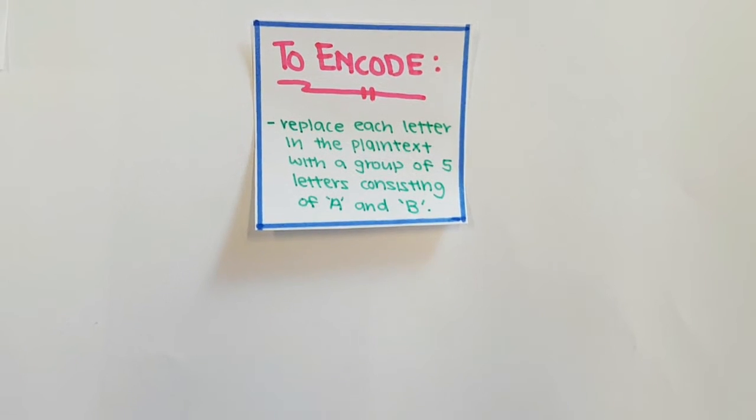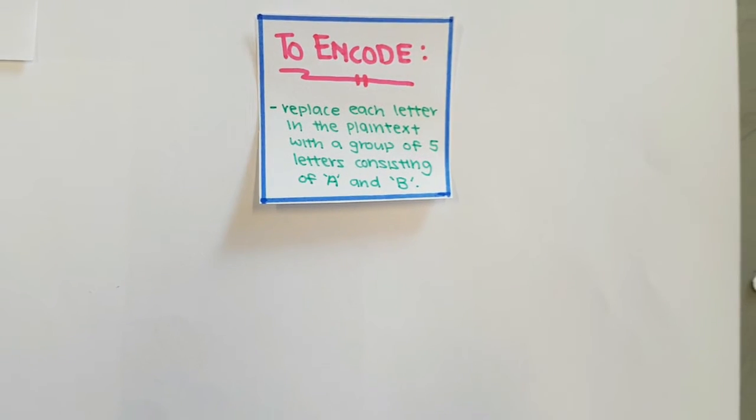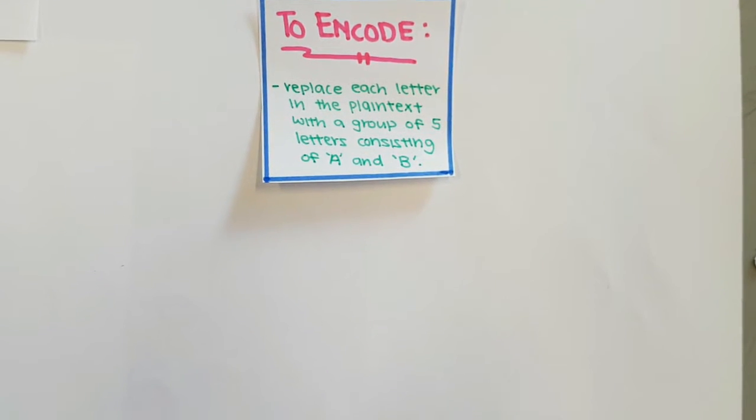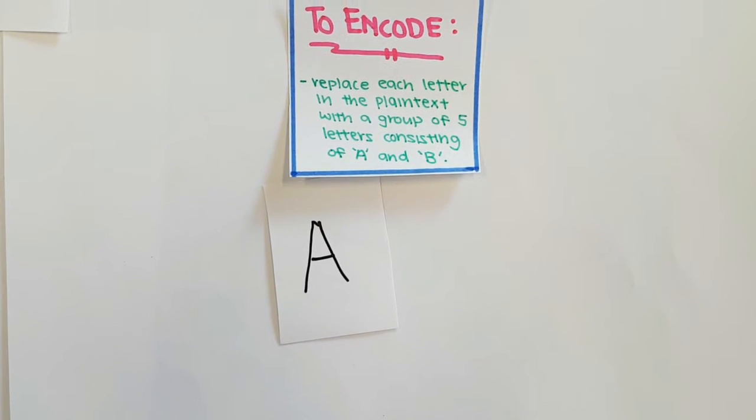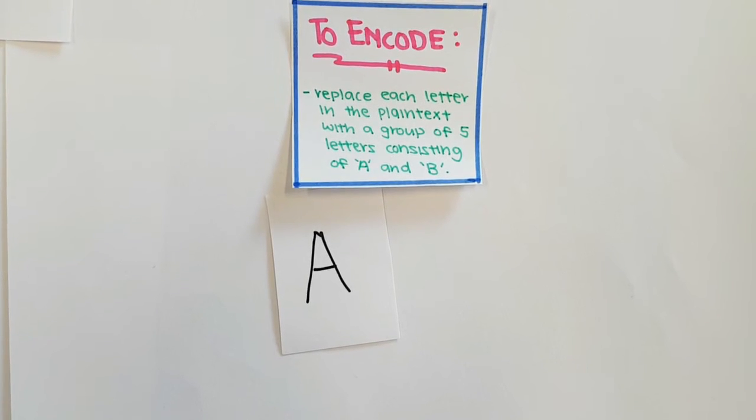Okay, now let's take a look at how Baconian cipher works. To encode a message using Baconian cipher, each letter of the plaintext is replaced by a group of five letters consisting of A and B.